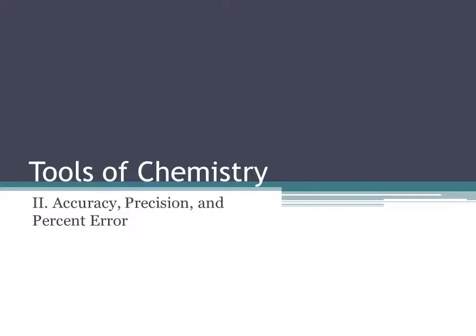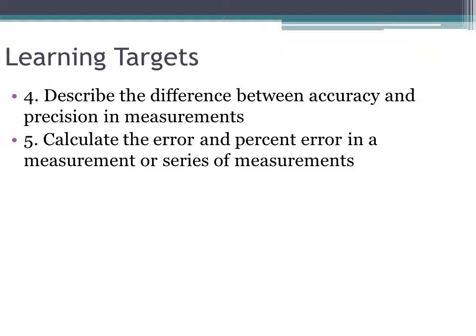The second video in the Tools of Chemistry unit is on accuracy, precision, and percent error. Here you can see the learning targets for the unit. We have two of them. The first thing we want to be able to do is describe the difference between accuracy and precision in measurements.